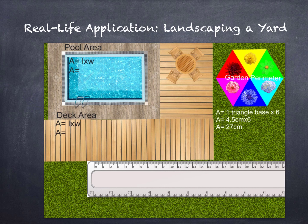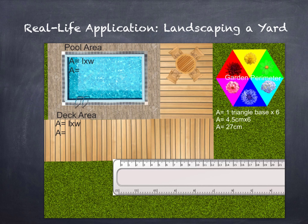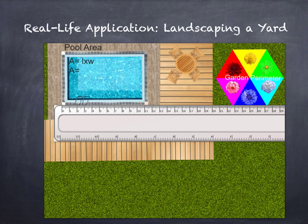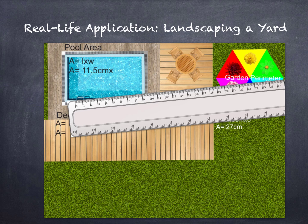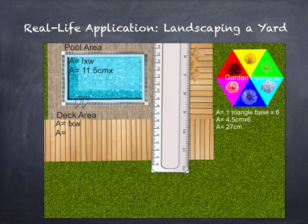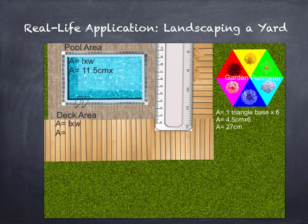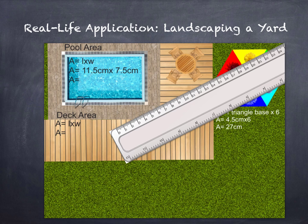Next, my pool area. The first side is 11.5 centimeters and my length is 7.5 centimeters. So 11.5 centimeters times 7.5 centimeters equals 86.25 centimeters squared.